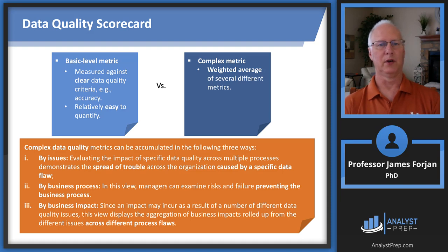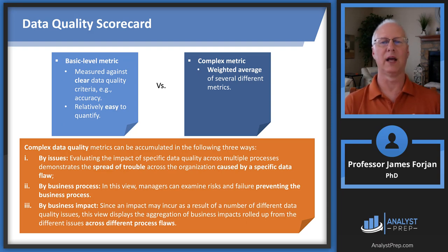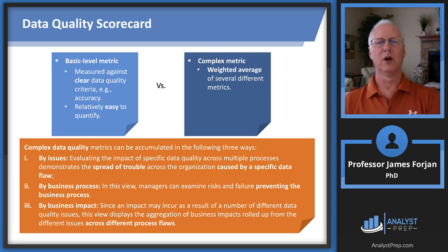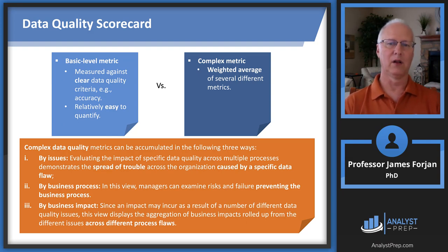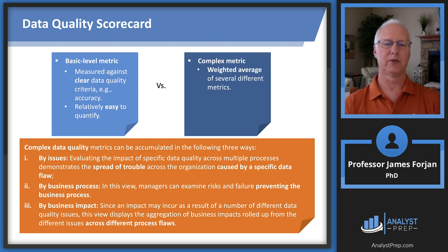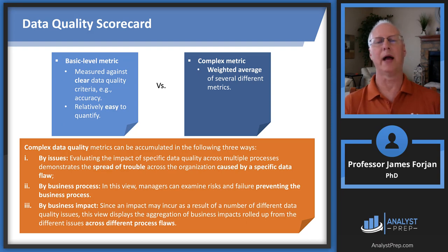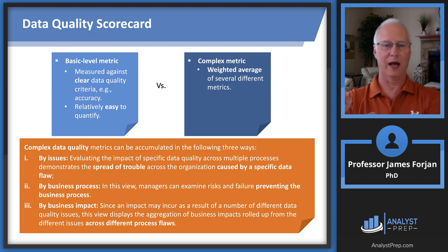For a scorecard or benchmark, you need a base-level metric measured against clear data quality criteria — is it accurate, easy to quantify, easy to transform? Then put together a more complex metric using a weighted average, which we're used to from portfolio management and asset management. You can do this complex metric a couple of different ways: by issue, by business process, or by business impact. Sometimes it's appropriate to do this inside a business line or one of its functions, but sometimes you can combine those. Remember, we're trying to be operationally efficient, not operationally perfect.